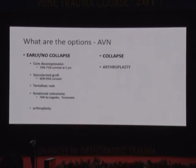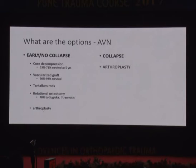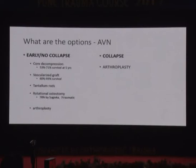When you develop AVN, you must first look at collapse versus no collapse. If there's no collapse, you can do core decompression — a low morbidity operation with arguably 70% survival — or a vascularized graft (60–90%), tantalum rods, rotational osteotomy, or arthroplasty. When there is collapse, most people suggest arthroplasty is the only option. As arthroplasty improves, our threshold for a total joint is very low. If there are avascular changes, most commonly they'll get an arthroplasty. People aren't doing Sujioka osteotomies much, although it's in the literature.